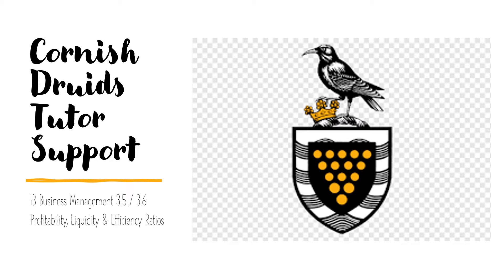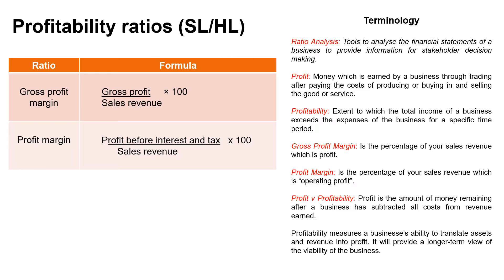Here's our next revision video building on the financial statements video — 3.5, 3.6 profitability, liquidity, and efficiency ratios. Ratio analysis: why exactly are you using ratios? They're the tools to interpret financial statements. The financial statements communicate the performance of a business for a certain period of time, so here you're assessing the profit position and profitability.